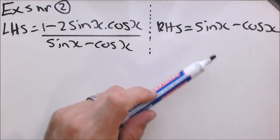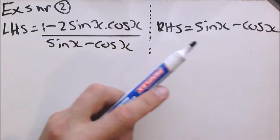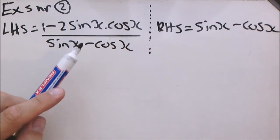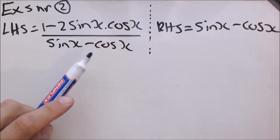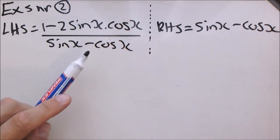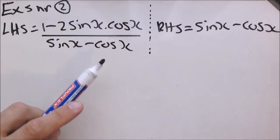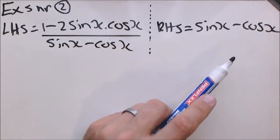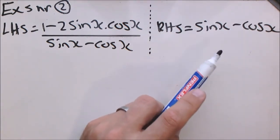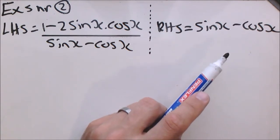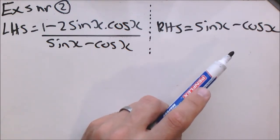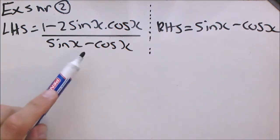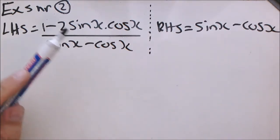The right hand side is simple enough, so we are just going to leave it as is for now. The left hand side is the one we are going to work with. It is important to notice here that we have a denominator of sin x minus cos x, but on the right hand side the denominator is just 1. In other words, sometime during the solution of this identity, we are going to have to cancel out a sin x minus cos x from the numerator.